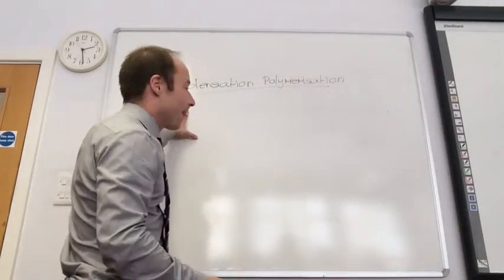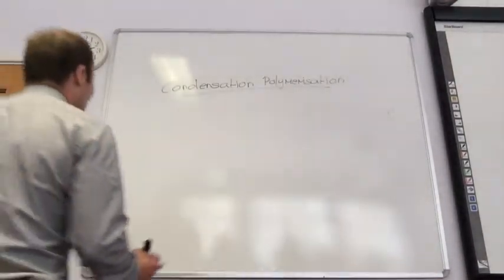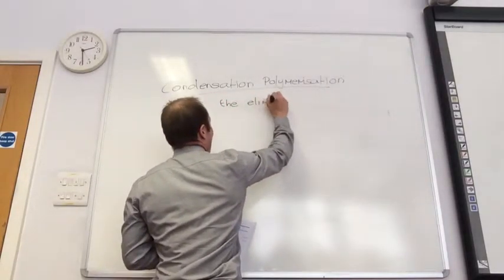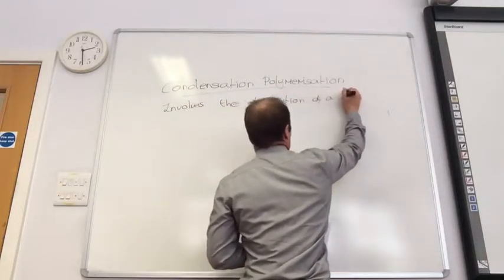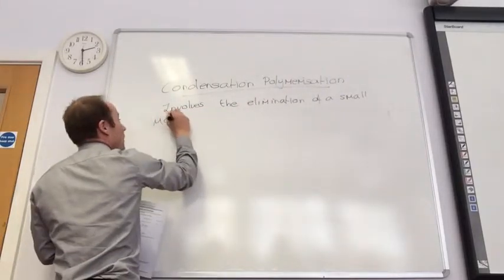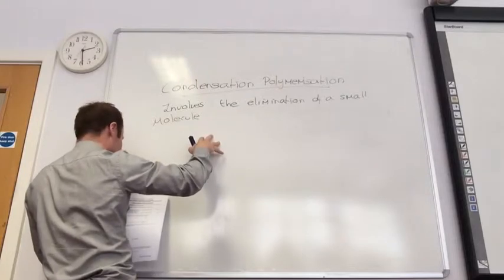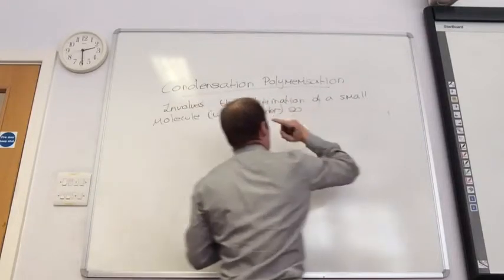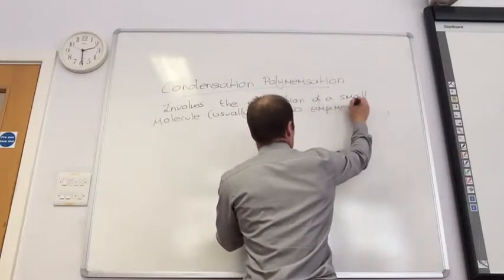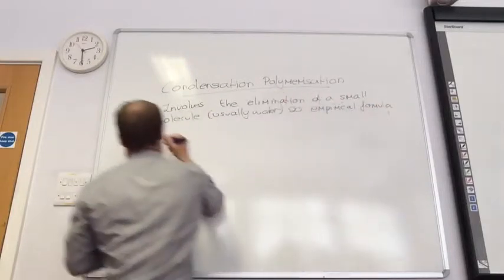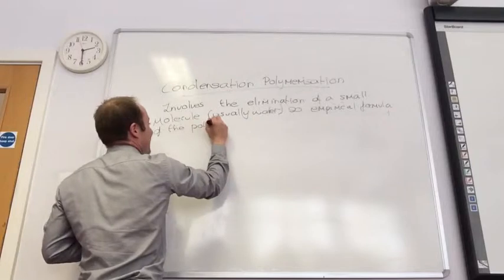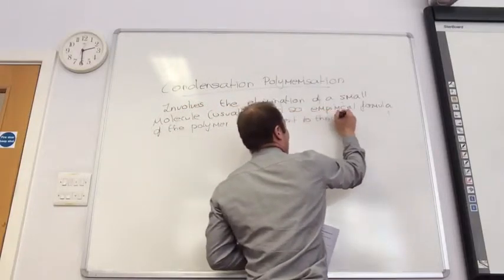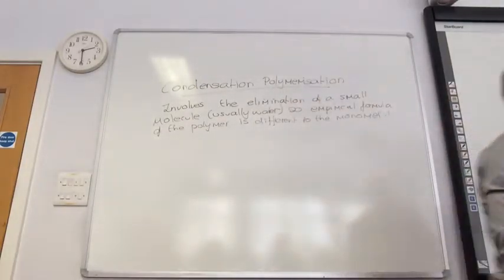Condensation polymerization involves the elimination of a small molecule. So these guys do not have 100% atom economy. Usually water. The empirical formula of a polymer is different to the monomer. It's worth just knowing that definition, because they often ask for that.